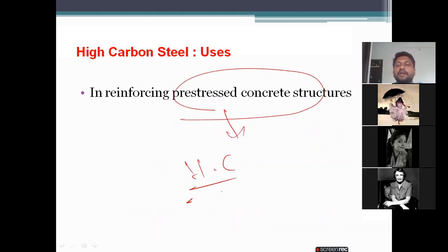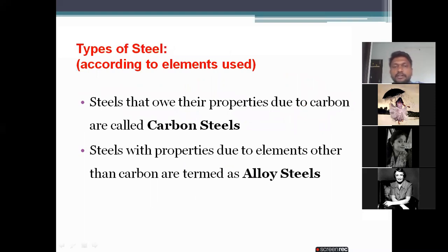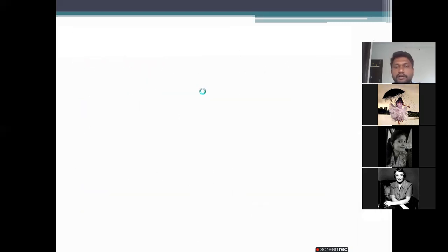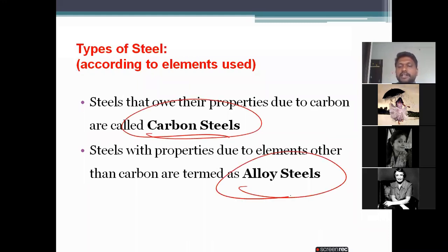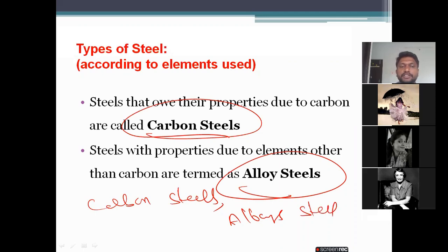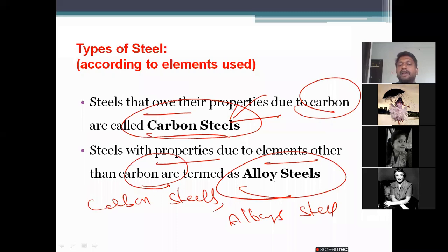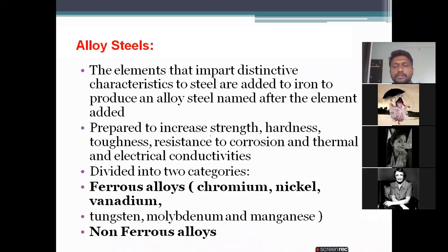According to their elements, steels are classified into two types: carbon steels and alloy steels. Steels that owe their properties to carbon are called carbon steels. Steels with properties due to elements other than carbon are called alloy steels. These are the two major important classifications.